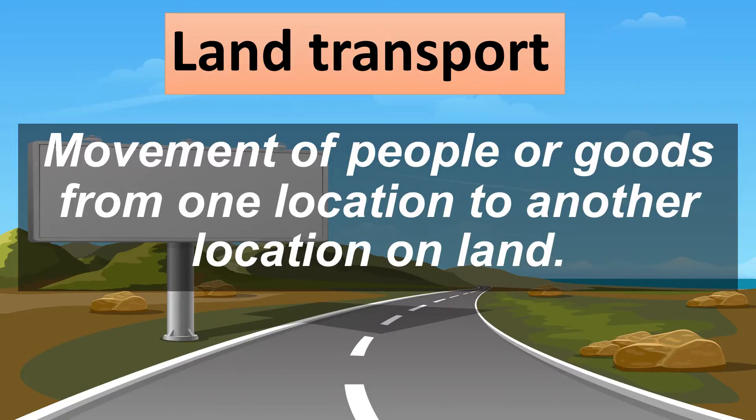Land Transport is the movement of people or goods from one location to another on land. It is the most common form of transport and it can be broadly divided into rail transport and road transport.